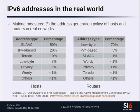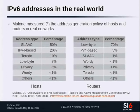For router addresses, 70% were low-byte addresses — meaning most are manually configured, with the interface ID set to all zeros and the administrator just changing the last byte. There was a 5% of IPv4-based addresses, and the rest of the numbers are mostly marginal.